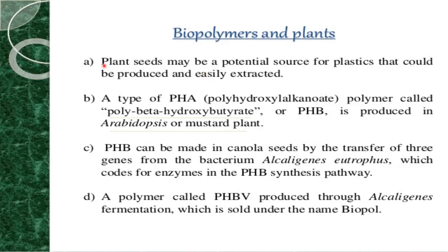Regarding biopolymers in plants: plant seeds may be a potential source of plastics that could be produced and easily extracted. A type of PHA — polyhydroxyalkanoate — polymer called poly-beta-hydroxybutyrate (PHB) is produced in Arabidopsis and mustard plants. PHB can be made in canola seed by transferring three genes from the bacterium Alcaligenes eutrophus, which code for enzymes in the PHB synthase pathway. The polymer PHV, produced through Alcaligenes fermentation, is sold under the name Biopol.